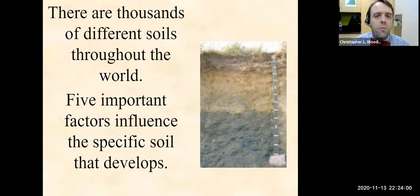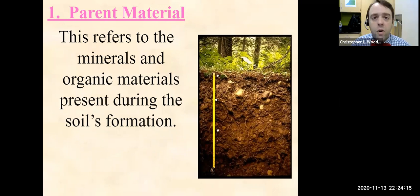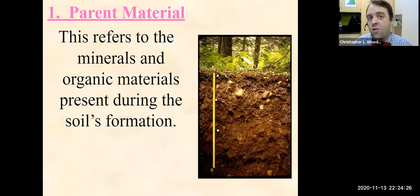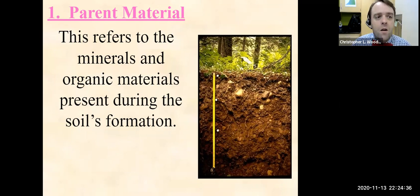There are different soils throughout the world — thousands of different types — but they're all influenced by the five primary things that contribute to how they develop. The first one is parent material, which refers to minerals and organic materials present during soil's formation. Think about an island created through oceanic subduction, a volcanic island that erupted — its material is going to be very different than material created through tectonic mountain building or continental collision.